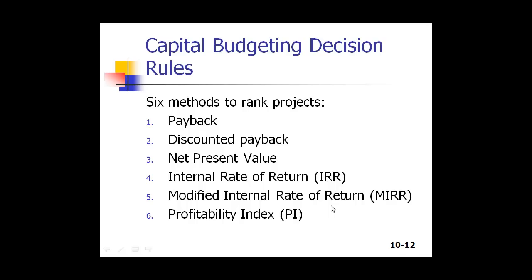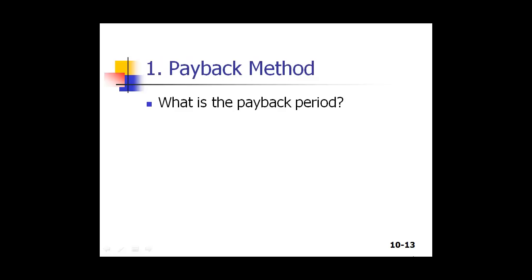We are now going to get into the meat of this chapter — what are the different ways of figuring out what projects to do? We'll talk about six methods: the payback method, discounted payback, NPV, IRR, modified IRR, and profitability index. Most of these methods, especially from the second onwards, rely on discounted cash flow and time value of money.